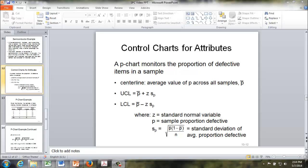Now let's look at control charts for attributes. One of the most popular and useful is called a p-chart. Most of the time, a p-chart is used to monitor the proportion of defective items in a sample. In a p-chart, the centerline is the average value of p across all samples, which is called p-bar. Essentially, p-bar is the average sample proportion defective.